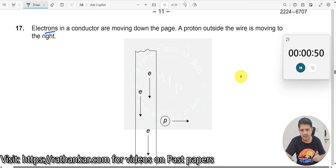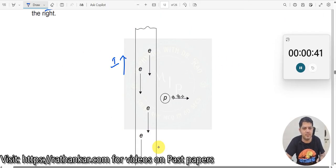Whenever a current electron is moving downwards, which means the conventional current is moving upwards, opposite to that of the electron flow, a proton outside the wire is moving to the right.